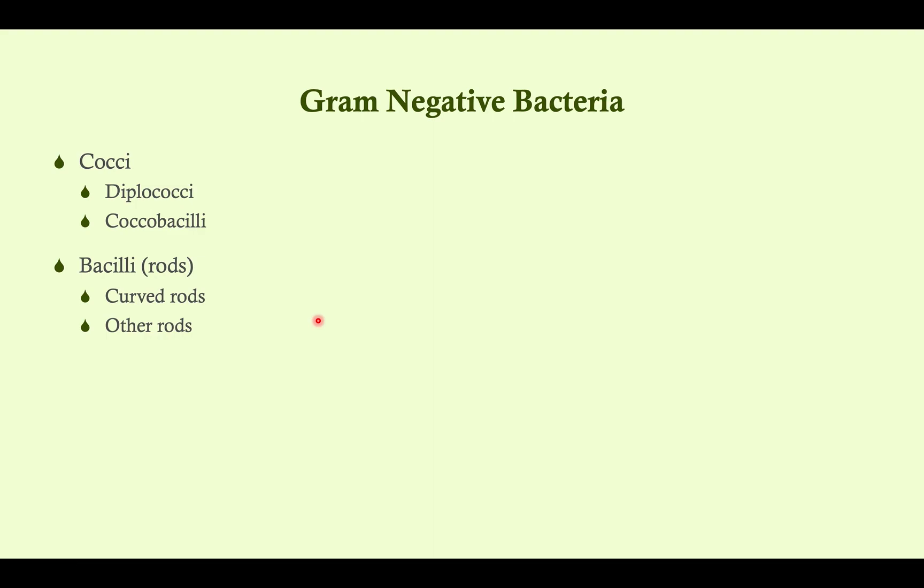Morphologically, there are four different ways to classify gram-negative bacteria — either as cocci or bacilli. For cocci there are two types: diplococci, which are two cocci together in formation, and coccobacilli, which are not quite spherical like a traditional cocci but more elongated — though not as elongated as a rod — so they're kind of in between. Then we have gram-negative bacilli, which come in two flavors: curved and not curved. There are three different curved rod types you need to know, and many straight rods — we'll spend most of our time on those.